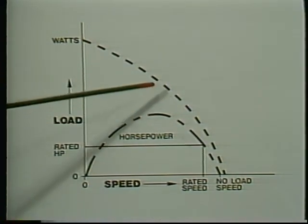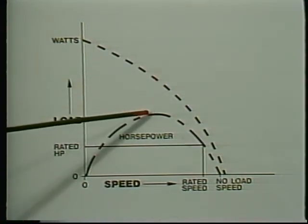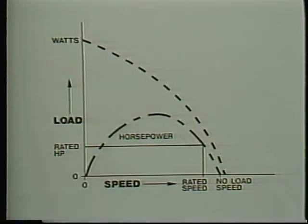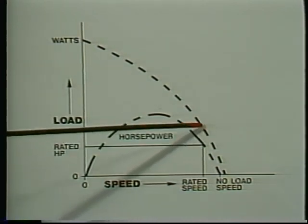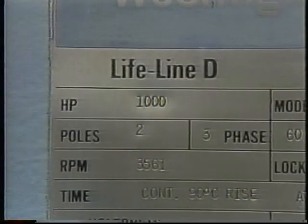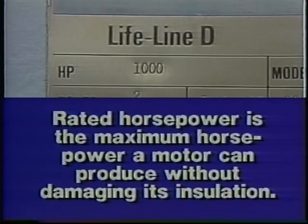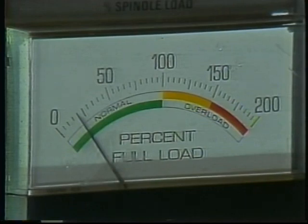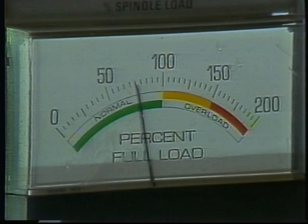Operating under heavy loads at low speed is almost as bad. At maximum power, the efficiency is high, but the difference between watts in and horsepower out is still large, and a motor will heat up if operated under these conditions for very long. At rated horsepower, a motor will heat up comparatively little — this is what rated horsepower means: the maximum horsepower a motor can produce without heating up so much that the insulation inside is likely to be damaged.